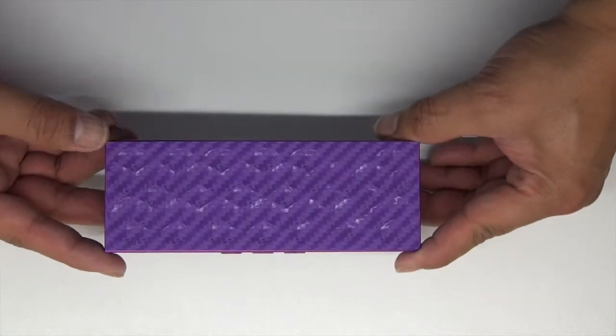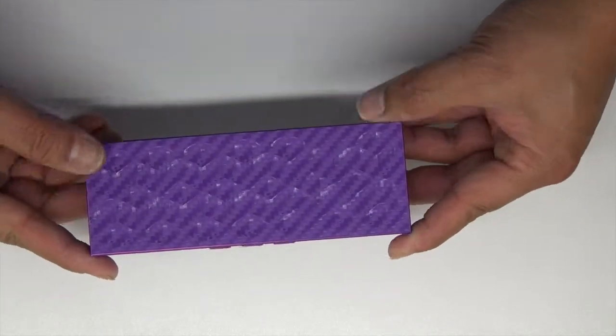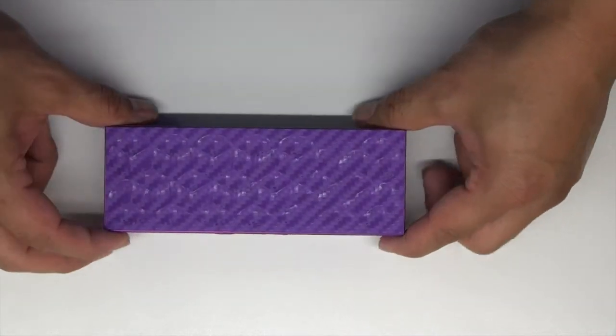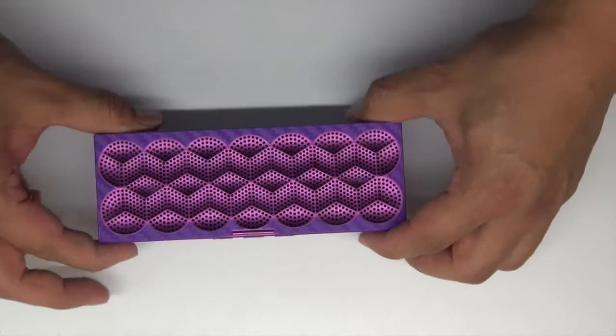And there you have it guys, the Mini Jambox purple snowflake wrapped in purple carbon fiber. Thanks for watching guys, and until next time.